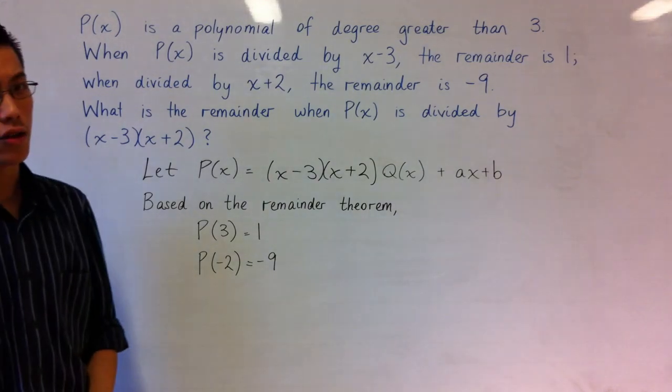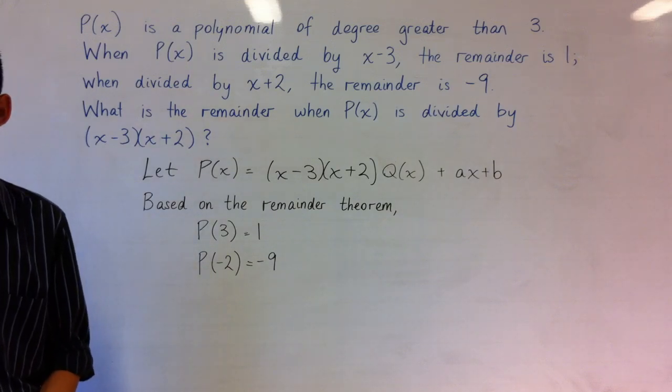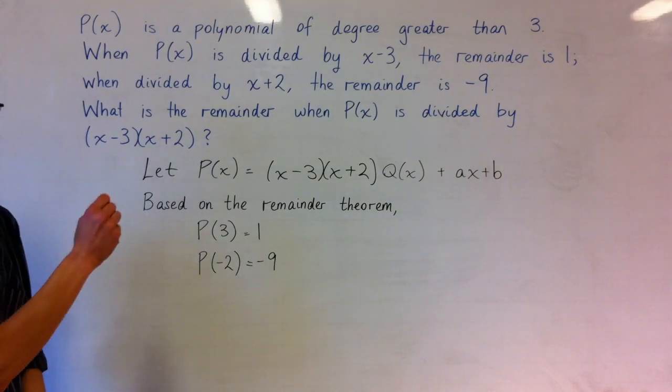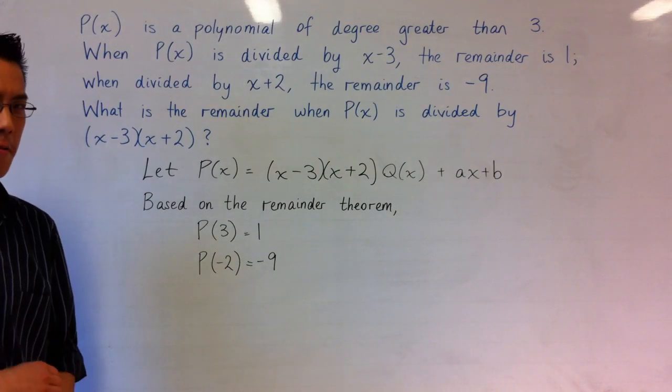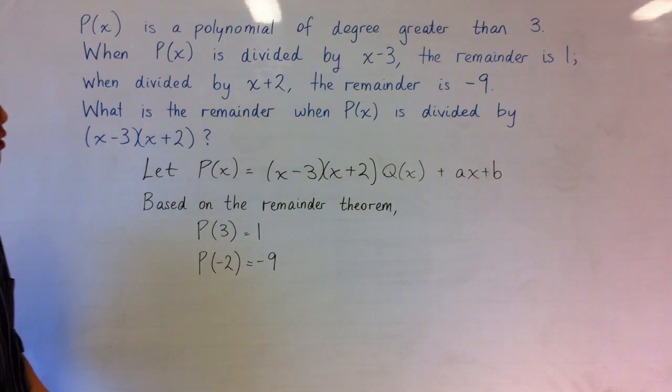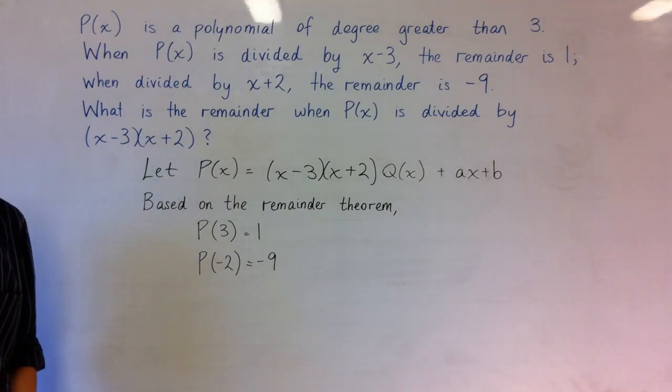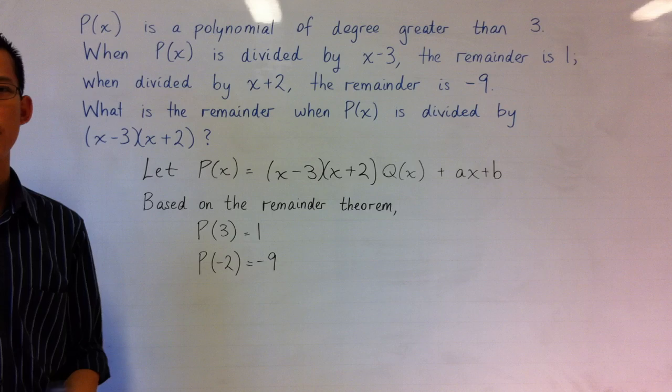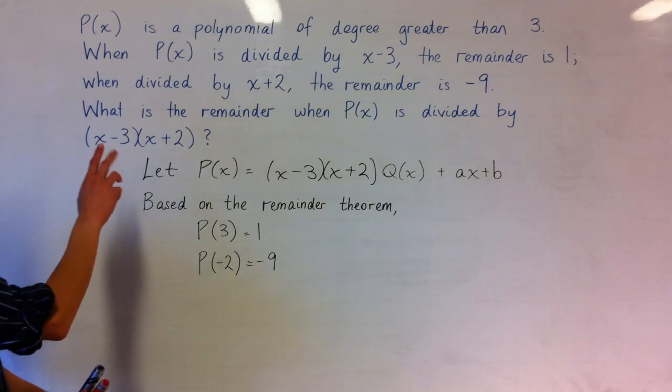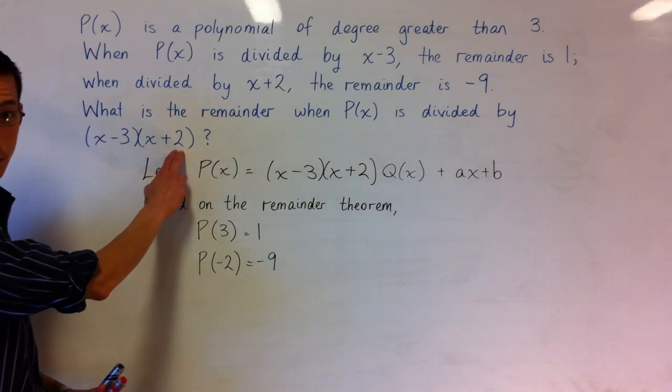P(x) is a polynomial of degree greater than 3. When P(x) is divided by x minus 3, the remainder is 1. When divided by x plus 2, the remainder is minus 9. So the actual question is what's the remainder when P(x) is divided by both at the same time, (x-3)(x+2)?